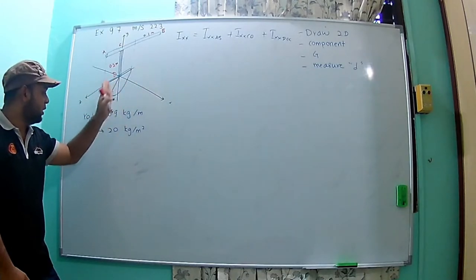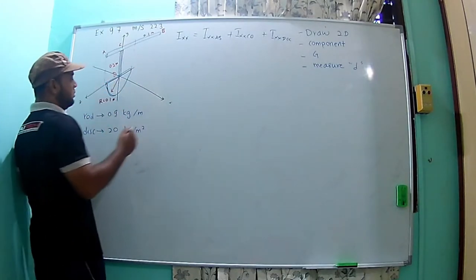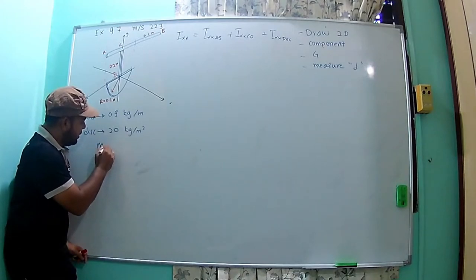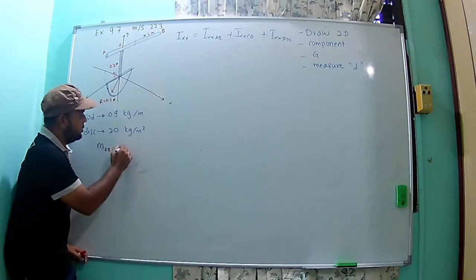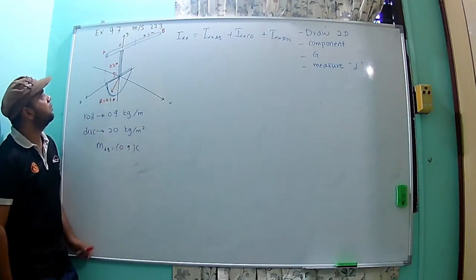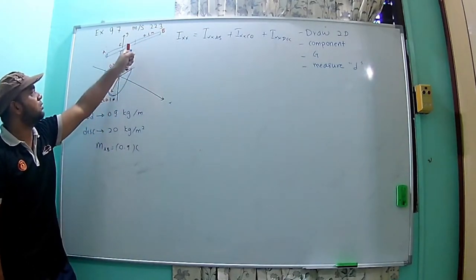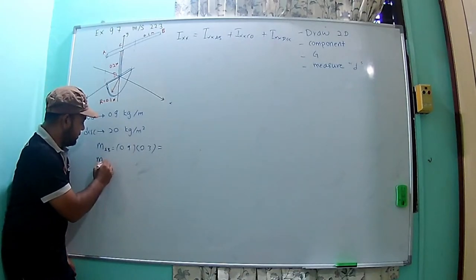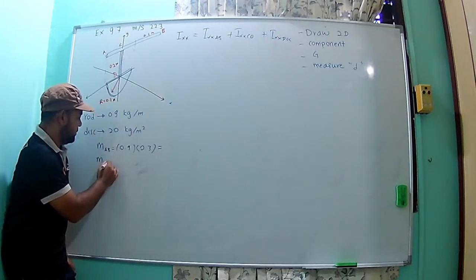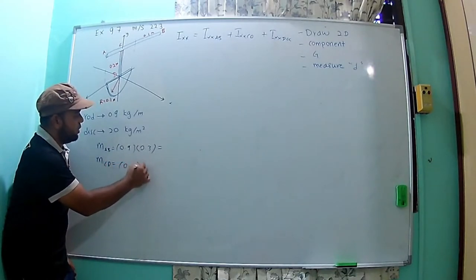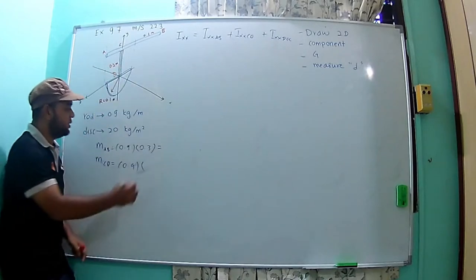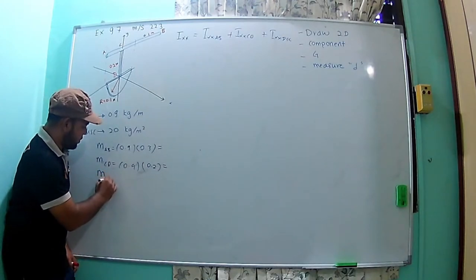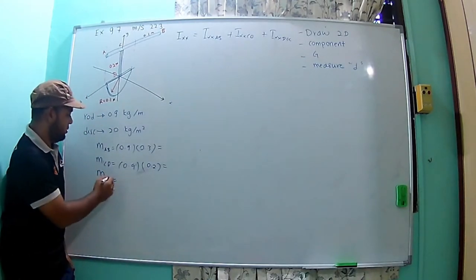We have three components, so you have to calculate the mass of each component. For the first one, M_AB equals 0.9 times the length 0.3, which gives 0.27 kg. Then M_CD equals 0.9 times 0.2, which gives 0.18 kg.